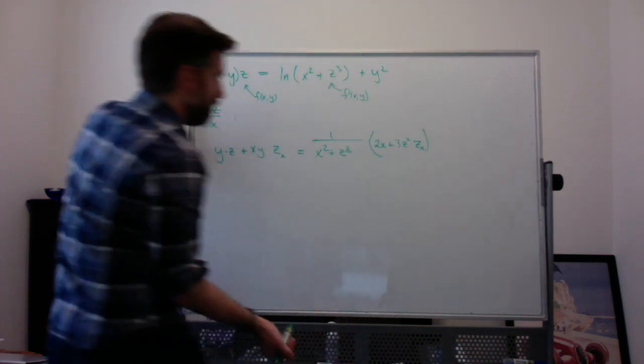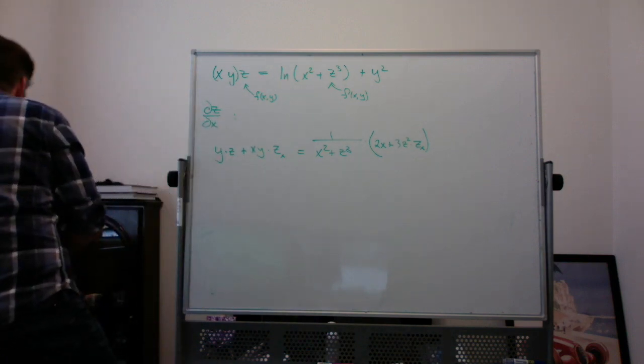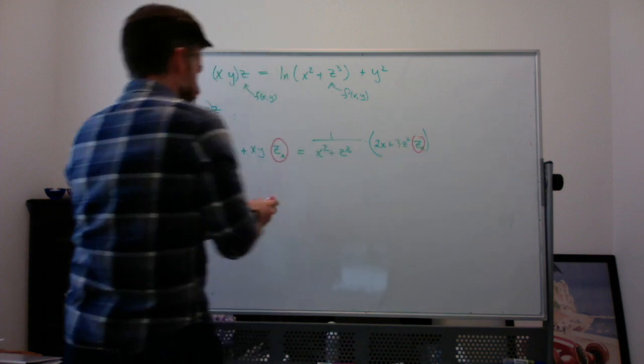And then we're going to do the algebra to solve for zx. So I circle my zx's to make sure I keep track of them. So there's the zx, and there's the zx, or it's ∂z/∂x.